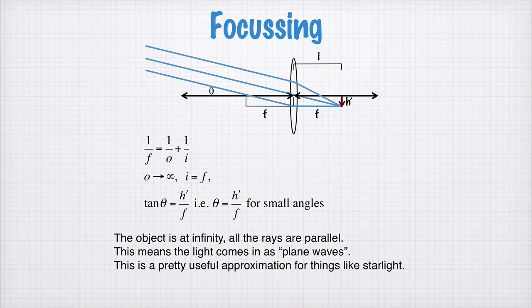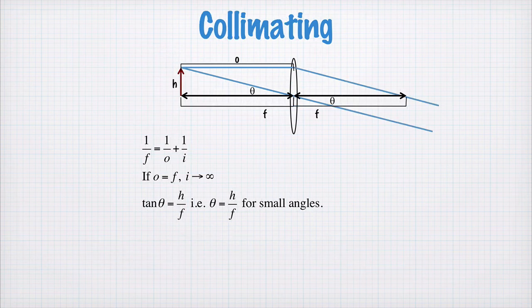The opposite of focusing would be collimating. So it's the same process, but now it's running in reverse. So we're starting here with an object, and the object is placed exactly at the focal length of the lens. So now light leaving a point at distance h from the optical axis, leaving a point here towards our lens, will then be collimated on the other side, so that now all of the rays are parallel on the other side, and we're generating essentially plane waves on the other side of the lens. So the rays are all parallel.